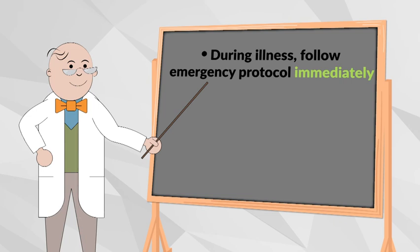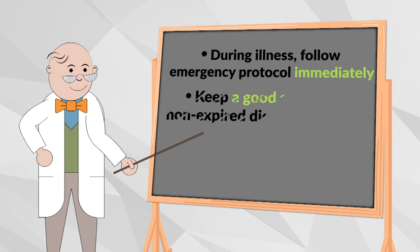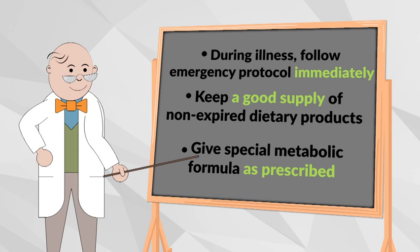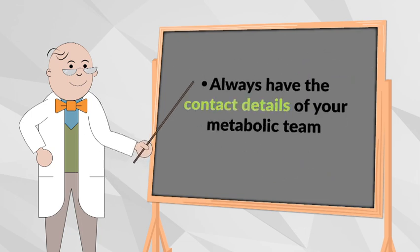They will determine the best course of action. Always ensure that you have a good supply of your special dietary products and special metabolic formula and that they are not expired. Continue to give the amount of metabolic formula as prescribed by your metabolic clinic and have your emergency protocol. Finally, always have the contact details of your metabolic team.